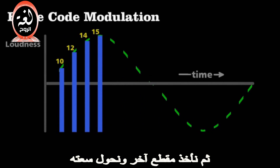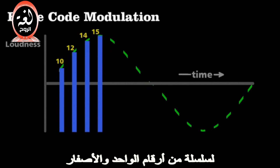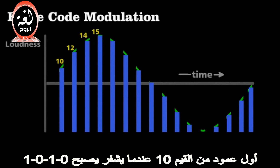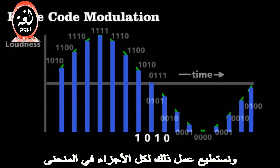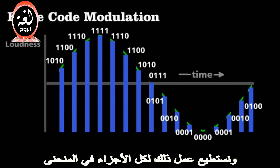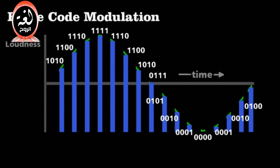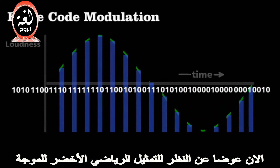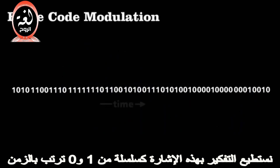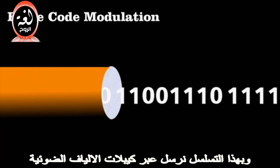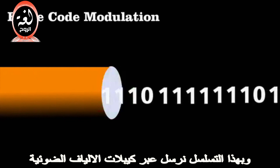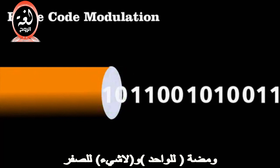We then take each section and convert its amplitude to a series of 1s and 0s. The first bar of value 10, when encoded, becomes 1, 0, 1, 0. We can do this for each section of the curve. Now, instead of looking at the green waveform or even the blue bars, we can think of the signal as a series of 1s and 0s organized by time. And it is that sequence that we send through a fiber optic cable — a flash for a 1 and nothing for a 0.